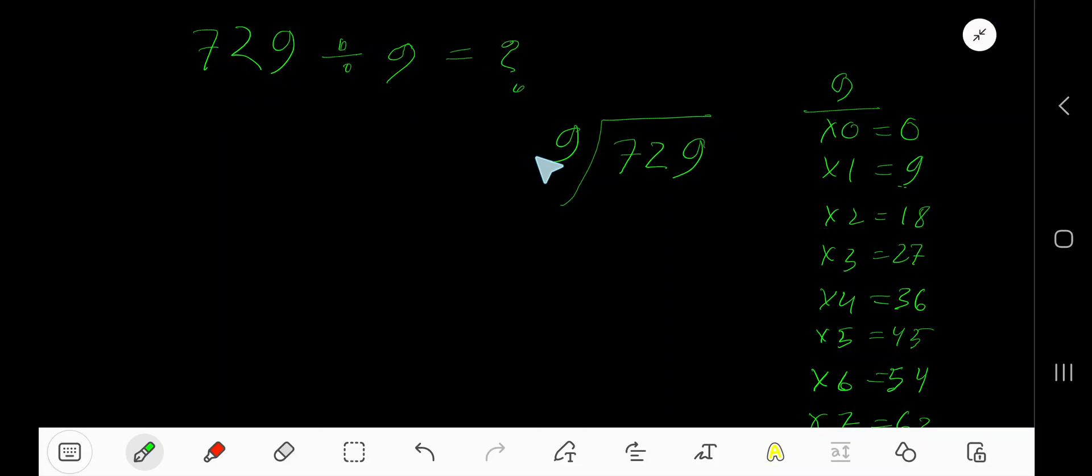729 divided by 9. Here 9 is the divisor, so we need the multiplication table of 9. 9 times 0 is 0, 9 times 1 is 9, 9 times 2 is 18, 9 times 3 is 27. To find out the multiplication table of 9, just add 9 with the previous step: 0 plus 9 is 9, 9 plus 9 is 18, 18 plus 9 is 27.